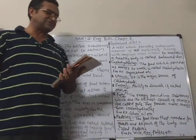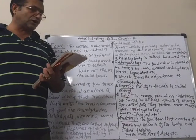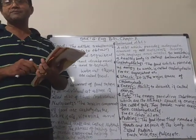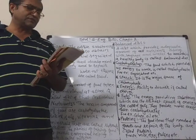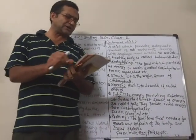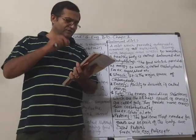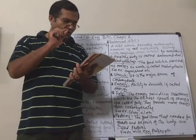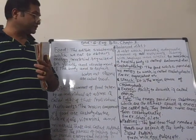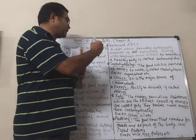Similarly for fats: fats are oily substances. Take the food item, rub it on paper, and if it leaves an oily substance on the paper, then you can say that fats or oils are present in that food item.